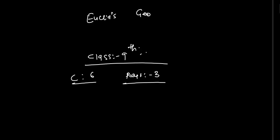In the previous video, we have seen Theorem 1: if there are two distinct lines, they have only one common point.